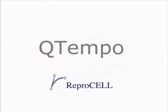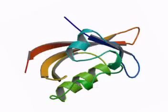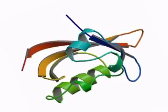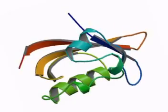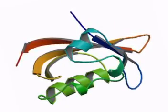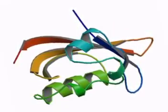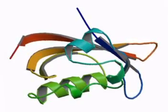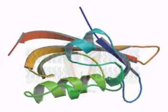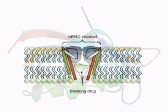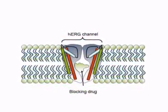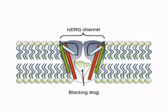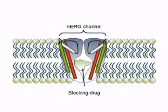Drug-induced QT-IP occurs when a drug binds off-target with cardiac ion channel proteins, most commonly the HERG protein shown here. This binding inhibits ion channel function, leading to arrhythmia and sudden cardiac death. The medical and financial consequences of QT-IP are immense and have spurred the development of assays that identify a compound's cardiac-related risk.